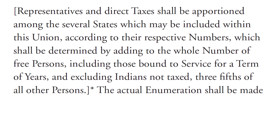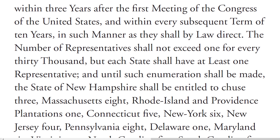Representatives and direct taxes shall be apportioned among the several states which may be included within this union, according to their respective numbers, which shall be determined by adding to the whole number of free persons, including those bound to service for a term of years, and excluding Indians not taxed, three-fifths of all other persons. The actual enumeration shall be made within three years after the first meeting of the Congress of the United States and within every subsequent term of ten years in such manner as they shall by law direct.